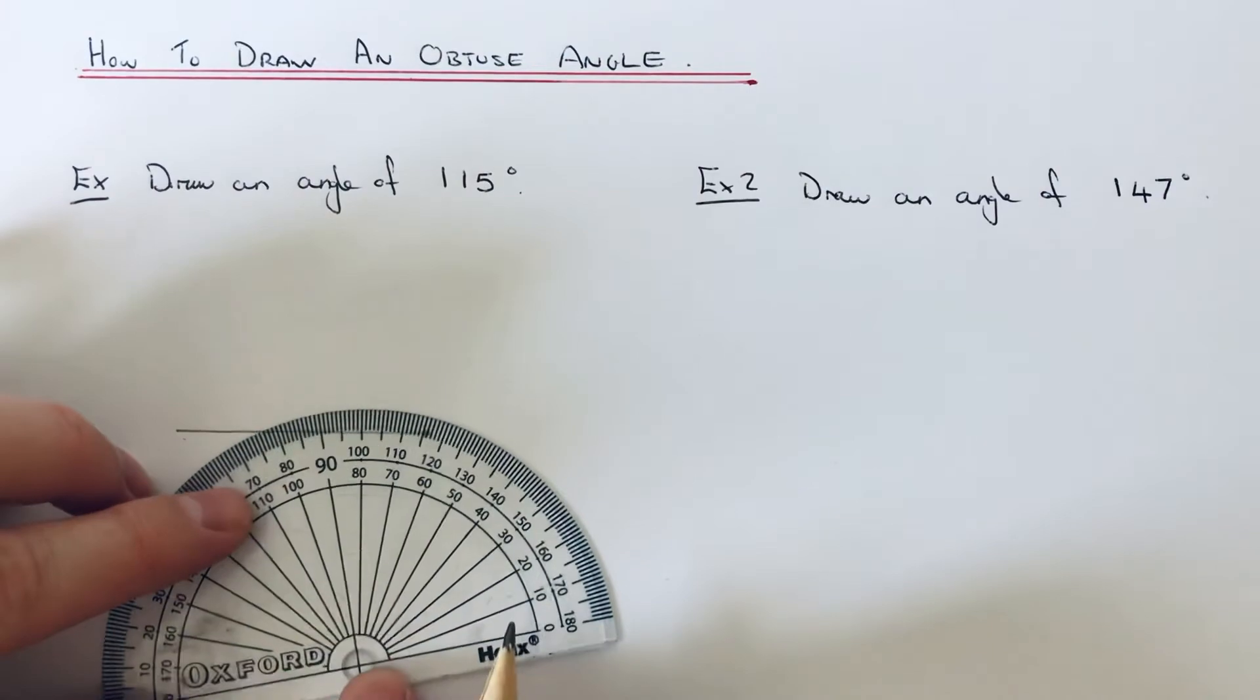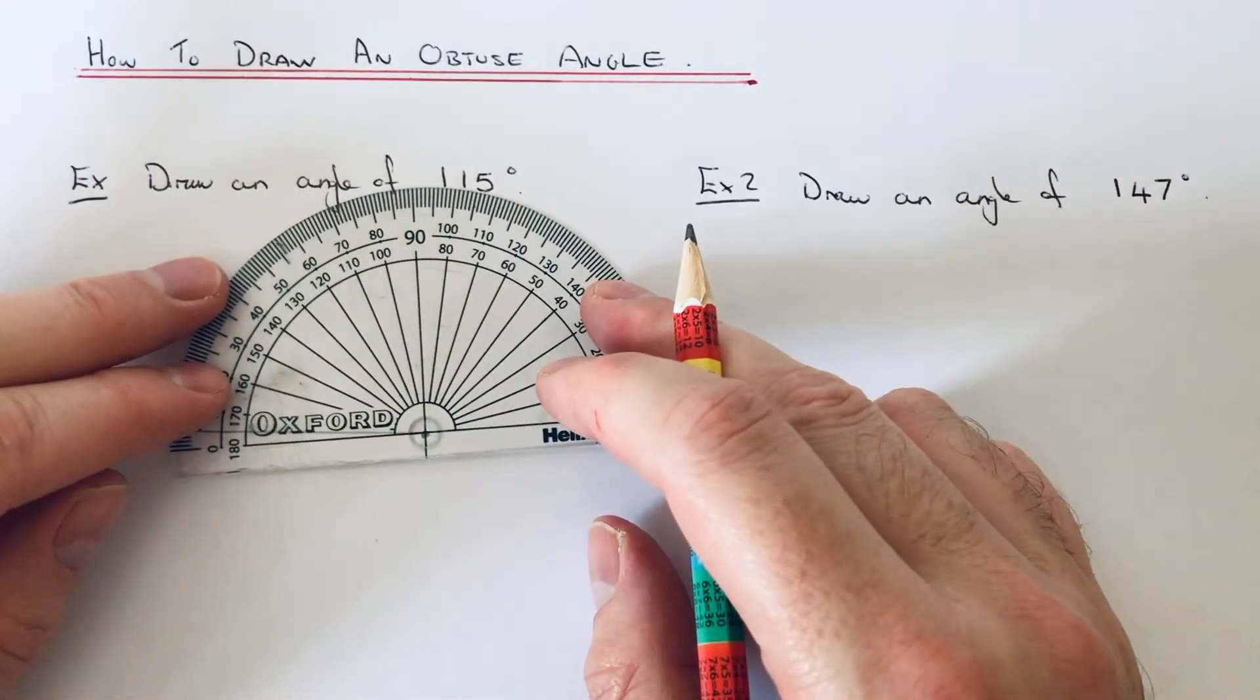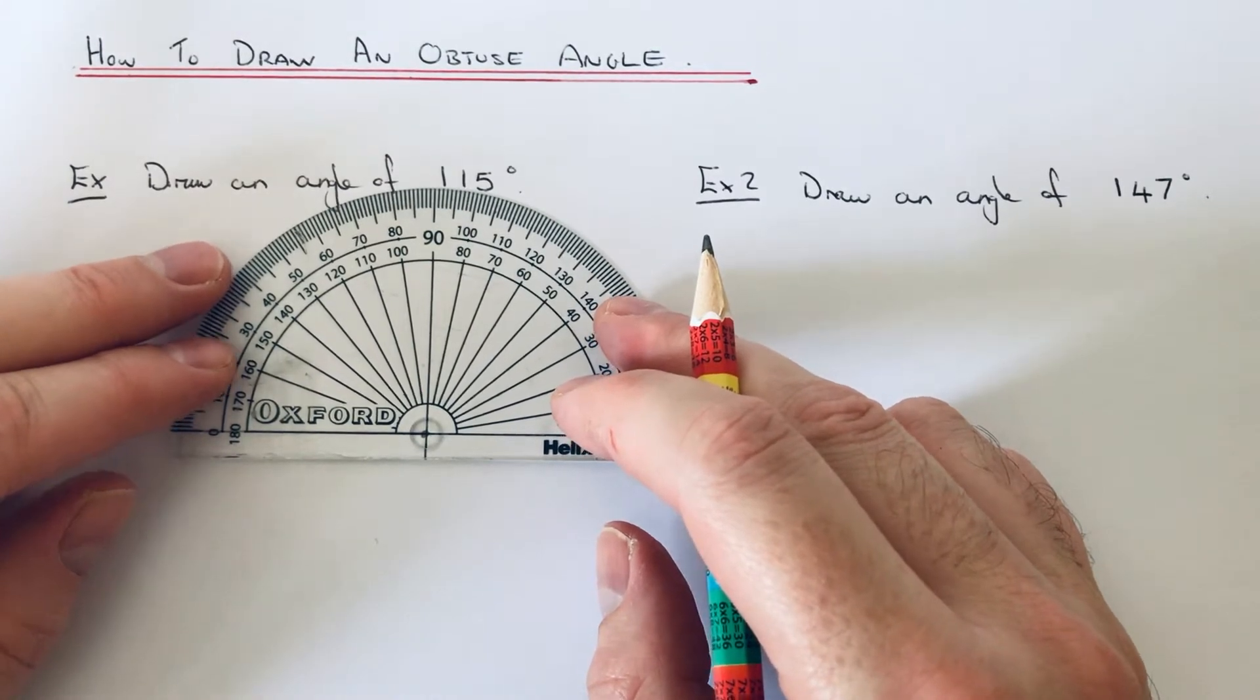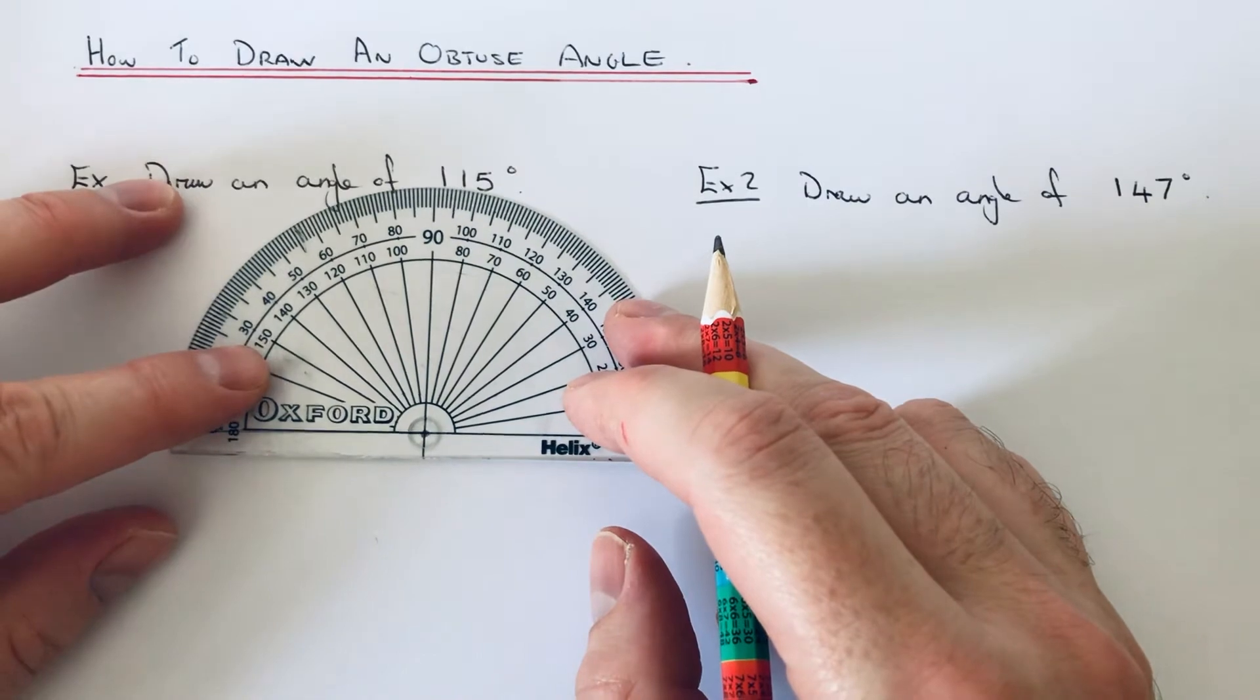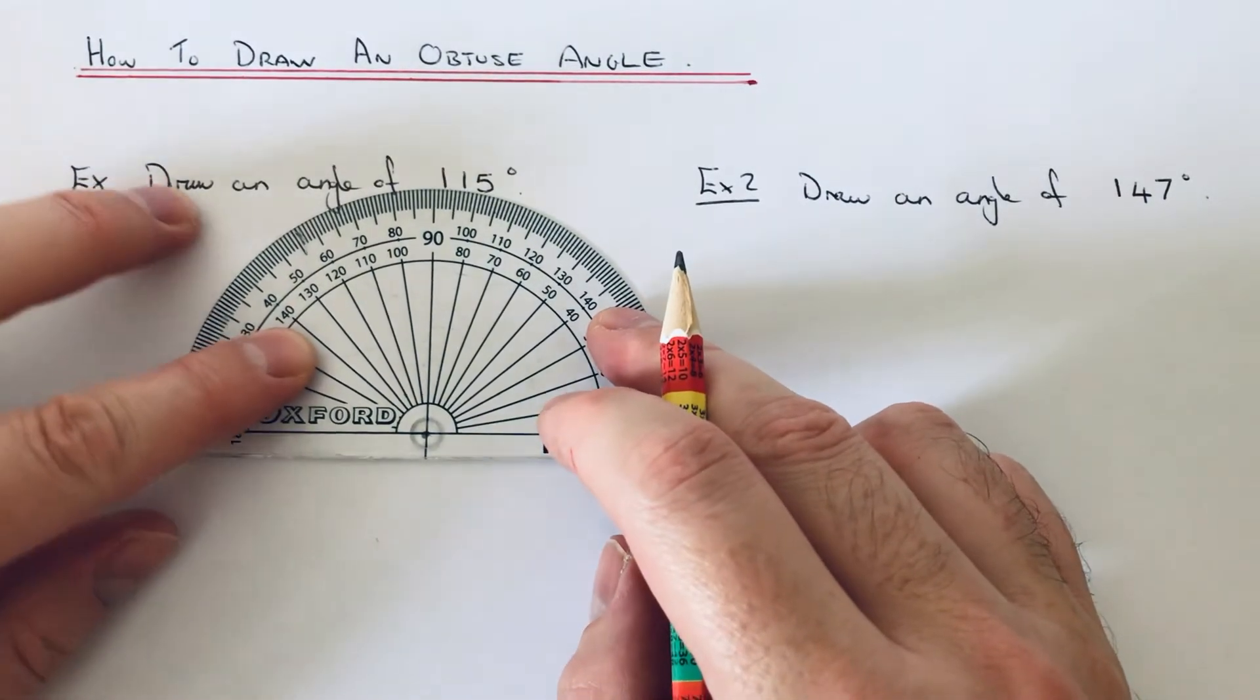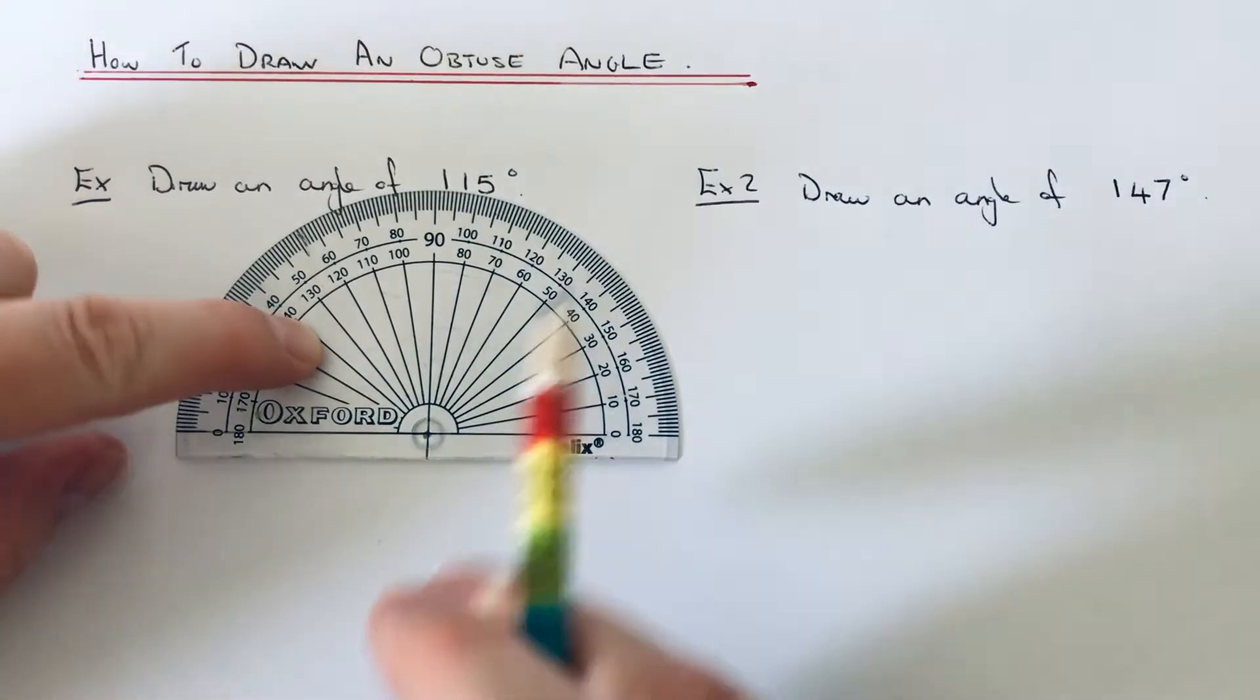If you get your protractor, put the center of the protractor on the end of the line and make sure you have the baseline going through the zero and 180 line at the bottom of the protractor. So as you can see, we've got the outside zero on that baseline, so we've got to go around on the outside of the protractor.